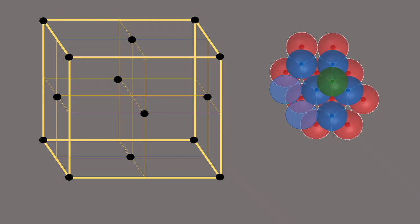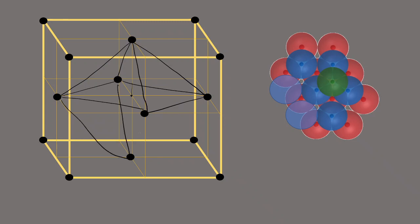So where is an octahedral void in the FCC unit cell? One of the octahedral voids is here — you join these points, make a square, and from the center of the square you go some height up so that the lengths equal the edge length of the square, then go some distance down, and you get this octahedral shape — here you have an octahedral void. If you look from this side along the body diagonal, you can see these two layers.